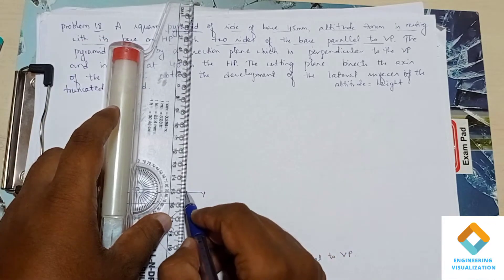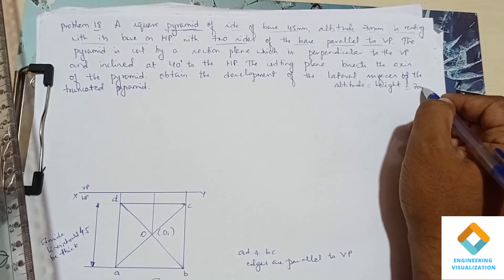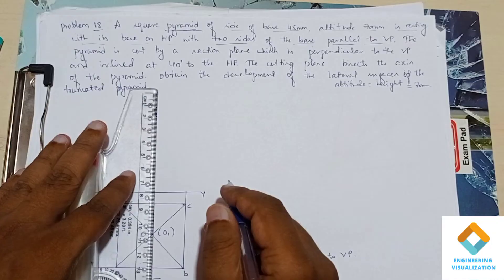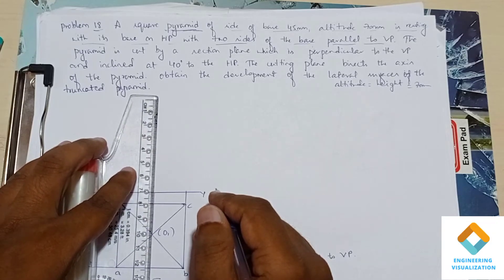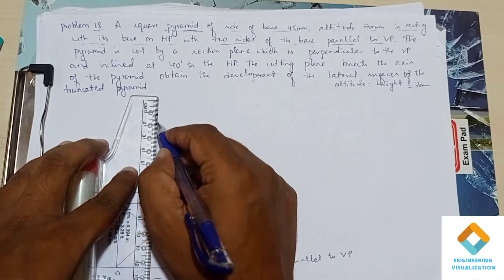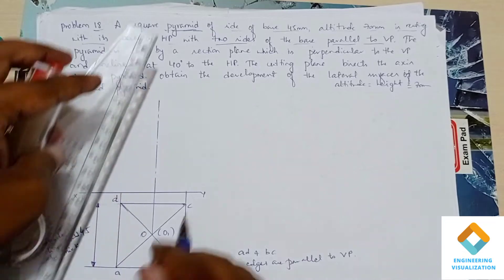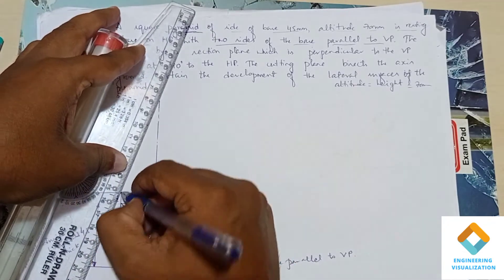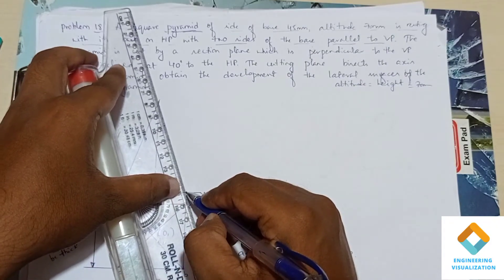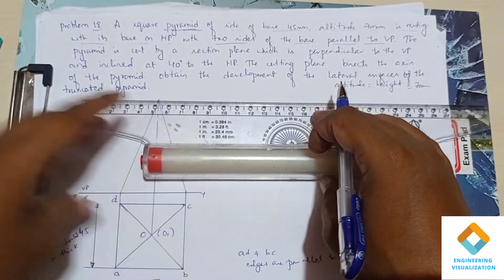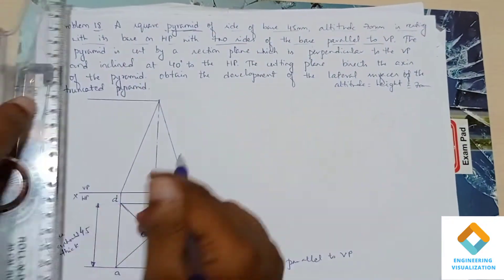Now project upward to draw the front view. In the front view, we have to consider the altitude — that is the height of 70mm. The front view of a pyramid is a triangle. Draw the front view triangle and show the dimension of 70mm for the height.